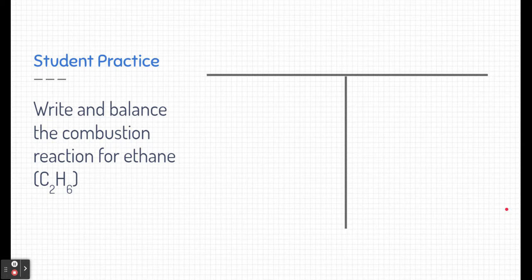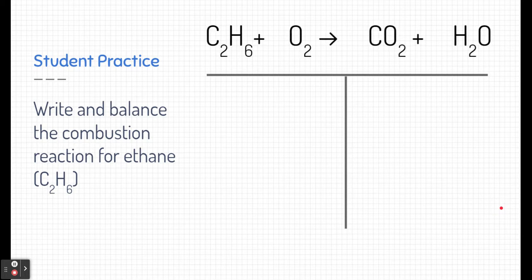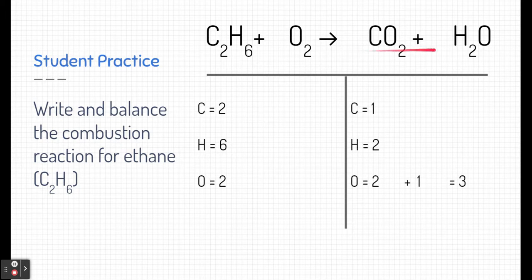Well, again we can easily write this combustion reaction. So here's ethane and oxygen—our fuel and oxygen are part of the hydrocarbon combustion in the reactant side, and that always forms carbon dioxide and water because this is a hydrocarbon combustion. Now let's balance. On my reactant side I have two carbons, six hydrogens, and two oxygens. In my product side I have one carbon, two hydrogens, and three oxygens. Again, I'm going to save oxygen to the very end.